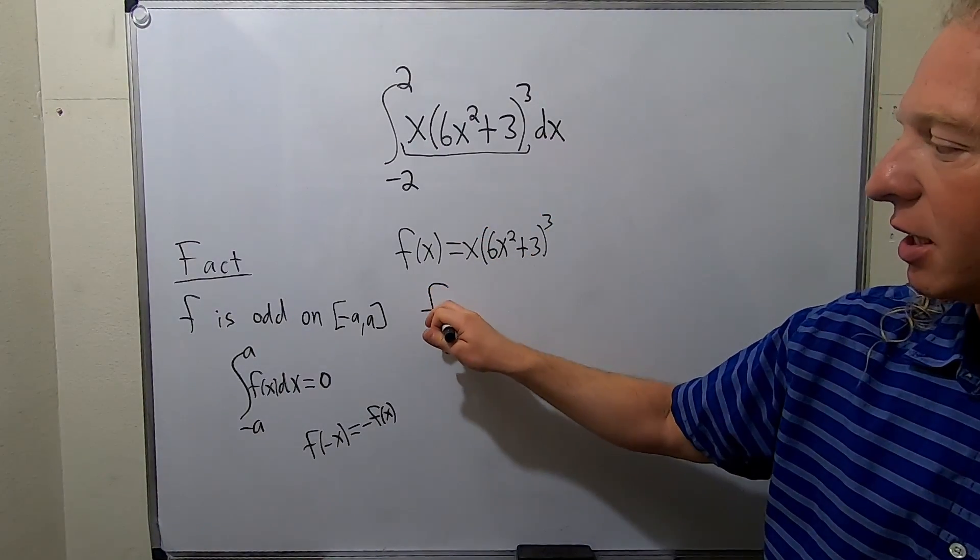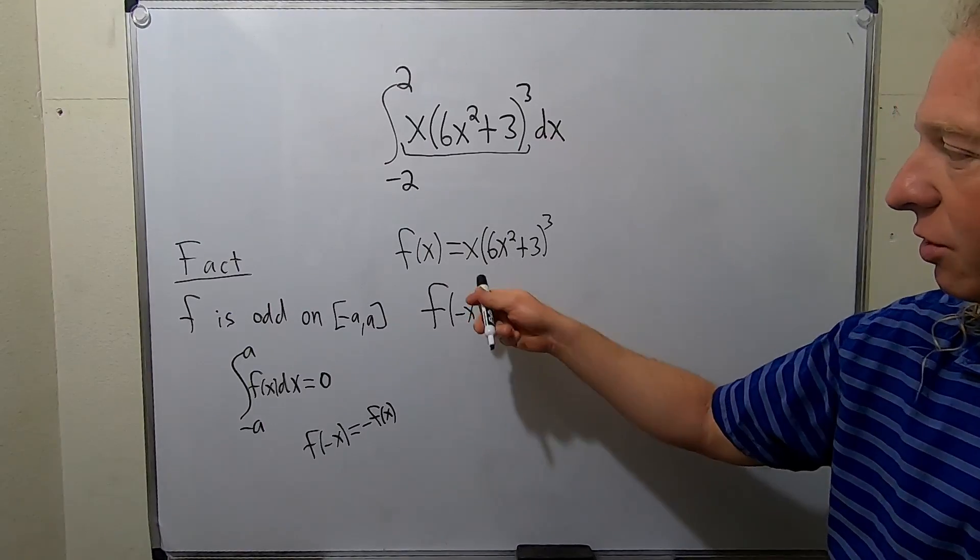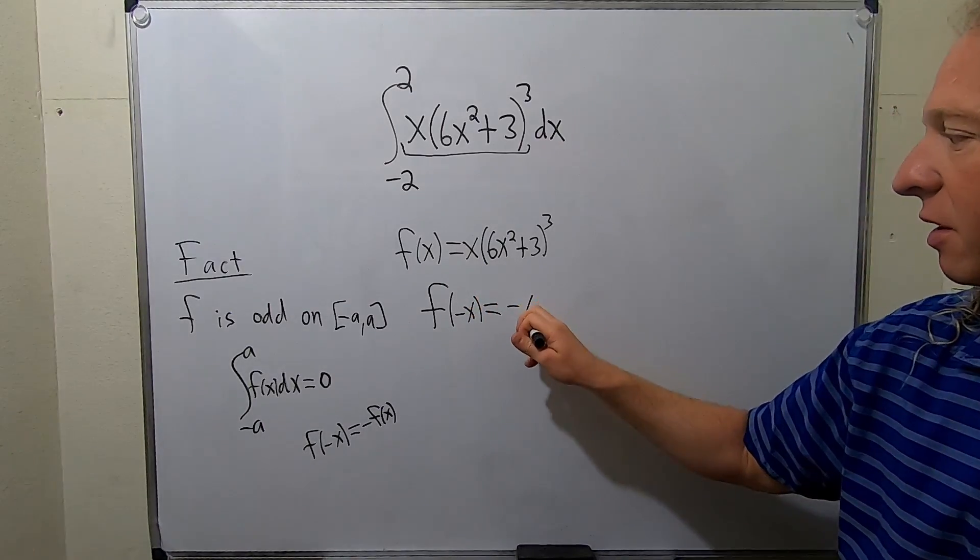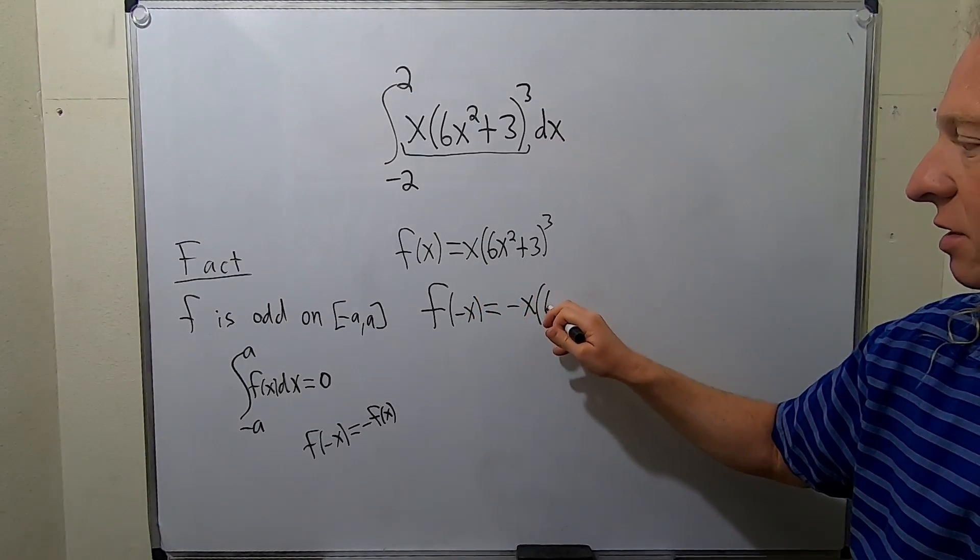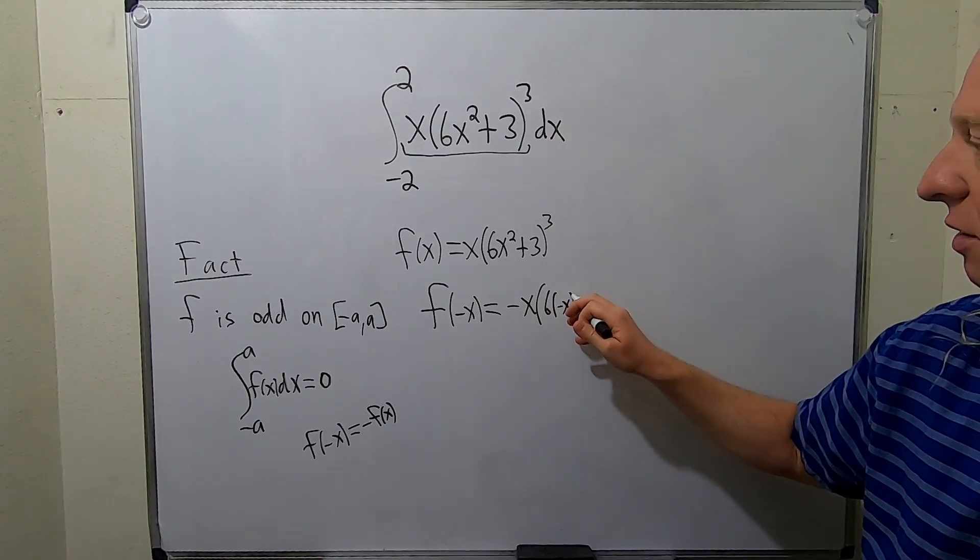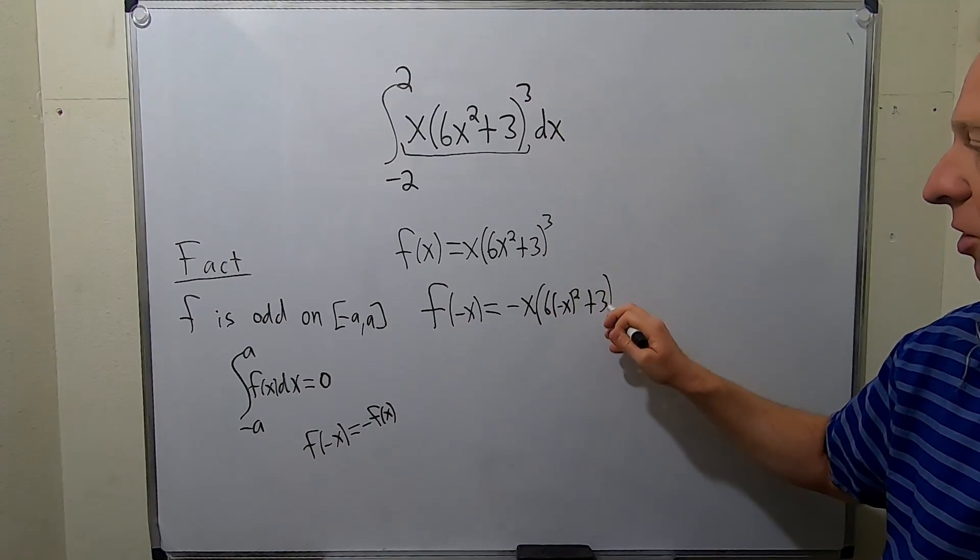You could replace the x with negative x. So your x would become negative x, and then here you would get 6 negative x squared plus 3 quantity cubed.